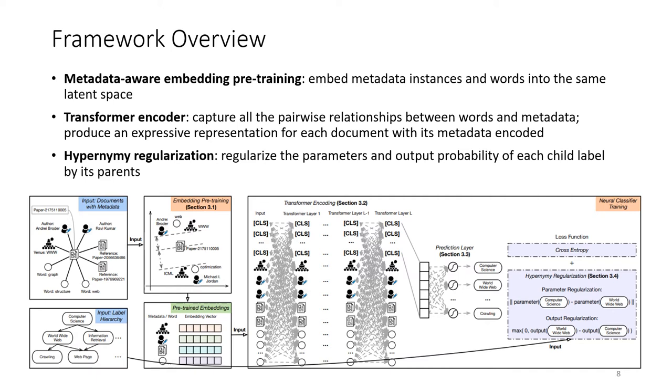The first one is metadata-aware embedding pretraining, which embeds metadata instances and the words into the same layer. The second component is a transformer-based encoder, which captures all the pairwise relationships between words and metadata so that it can produce expressive representation for each document. And after prediction, the third part is hypernymy regularization, which regularizes the parameters and output probability of each child label by its parents.